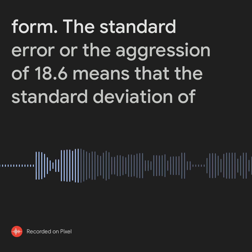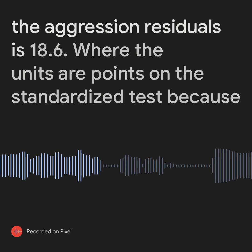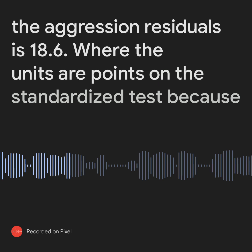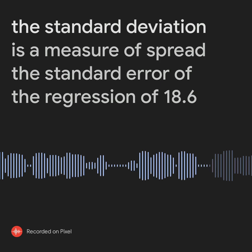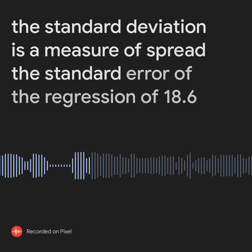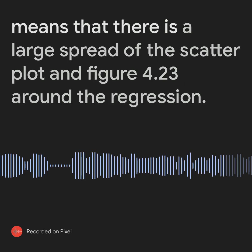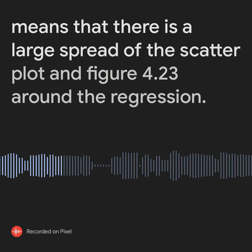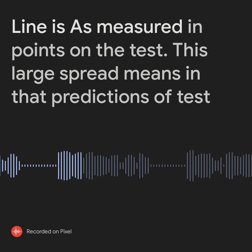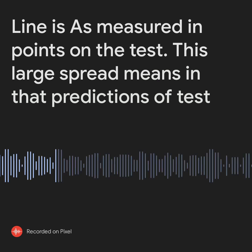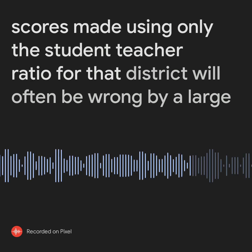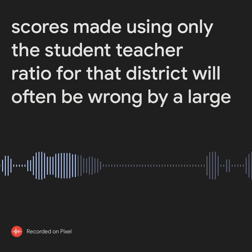The standard error of the regression of 18.6 means that the standard deviation of the regression residuals is 18.6, where the units are points on the standardized test. Because the standard deviation is a measure of spread, the SER of 18.6 indicates a large spread of the scatterplot around the regression line. This large spread means that predictions of test scores made using only the student-teacher ratio will often be wrong by a large amount.